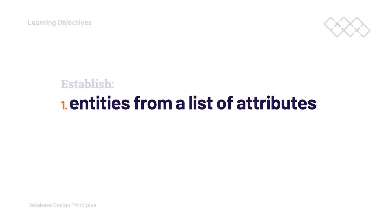So now we've taken a look at the traditional approach — approach one — let's take a look at a second approach that we can use to identify entities. You may undertake both approaches in order to reconfirm the fact that you've found the entities and attributes, but this is a different approach.